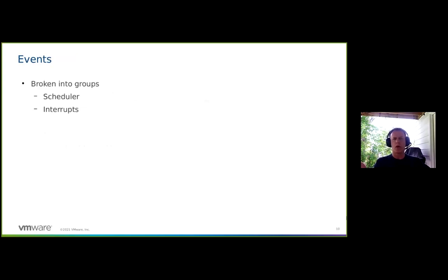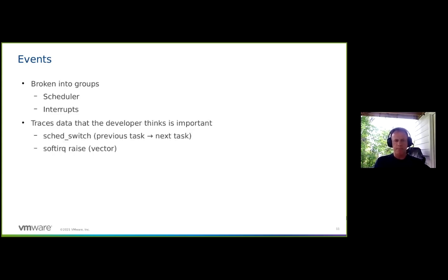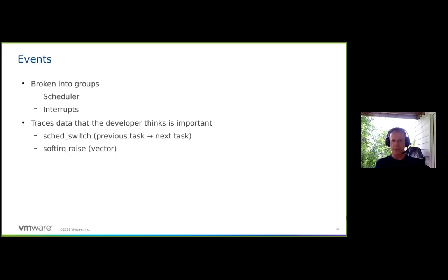Events are broken up into groups — for example, there are scheduler events, interrupt events, and block events. There are now probably close to 100 different groups. Each event is created by a developer who wants some information that's important for debugging. You can enable these events and they extract data into a ring buffer accessible from user space. For example, if you're having a problem with your block device driver, you can enable events there and see what's happening.